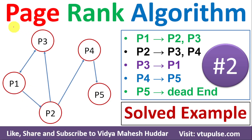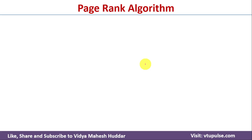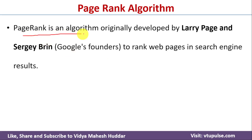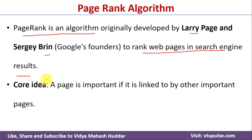Welcome back. In this video I will discuss how to apply the PageRank algorithm to a given web page and find the ranks of each web page with a simple example. I already have a few examples on PageRank algorithm — links for those videos are given in the description below. PageRank is an algorithm originally developed by Larry Page and Brin to rank web pages in search results. It works by assigning a rank to each page based on the number and quality of links to it.